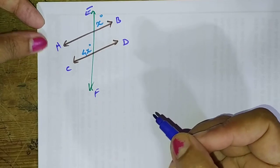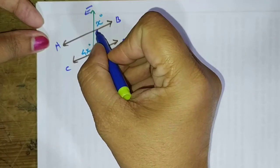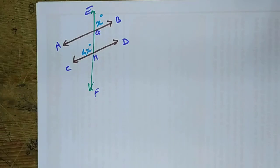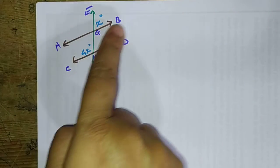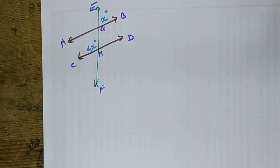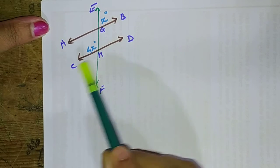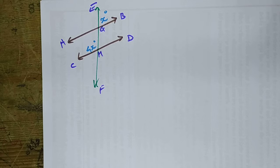And the point of intersections are G and H. Now if angle EGB is given to be X, and angle CHG is given to be 4X.